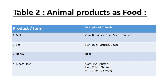For eggs, we get them from hen, duck, ostrich, and goose. The third product is honey - we get honey from bees. Bees collect the nectar from the flowers and store it in their beehives. The fourth product is meat or flesh. The flesh of goat and pig is eaten in the form of mutton. Hen is eaten in the form of chicken. Some seafood we get from crab and fish.